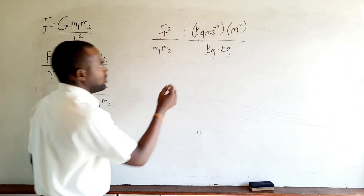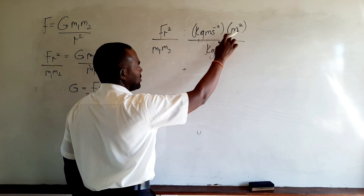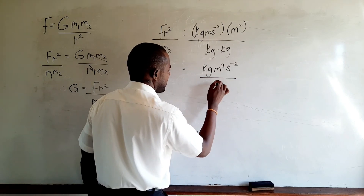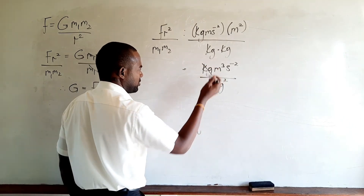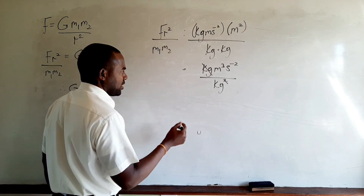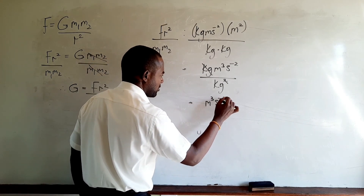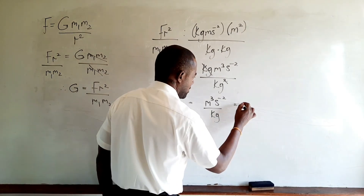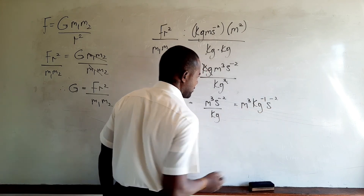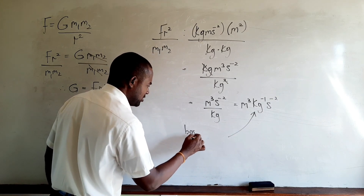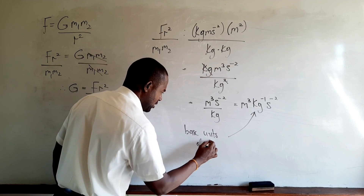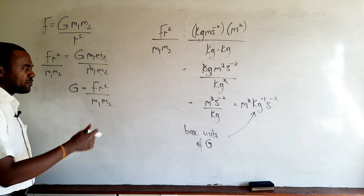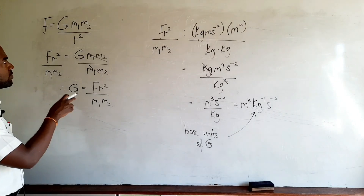Simplifying: in the numerator, meter times meter squared gives meter cubed. So we have kilogram meter cubed per second squared, divided by kilogram squared. The kilogram in the numerator cancels one kilogram in the denominator, leaving kilogram in the denominator. The result is meter cubed per kilogram per second squared, which in index form is meter cubed per kilogram per second squared. This is the base units of G, the universal gravitational constant.